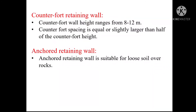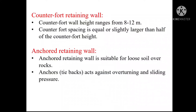The anchored retaining wall is employed when space is limited or a thin retaining wall is required. It is suitable for loose soil over rocks, and considerably high retaining walls can be constructed using this system. Deep cable rods or wires are driven deep sideways into the earth, and the ends are filled with concrete to provide anchors. These tie-backs act against overturning and sliding pressure.